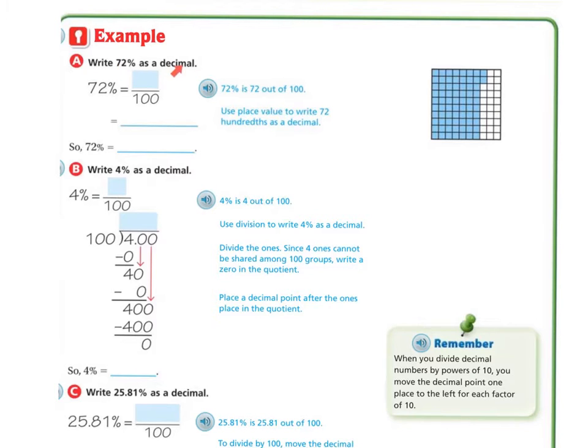Write 72% as a decimal. 72% is 72 over 100. If I want to write this as a decimal now, I'm going to put 0.72. So 72% is the same thing as 0.72, or 72 hundredths, because this one gives you the name hundredths, and this is 72 hundredths.